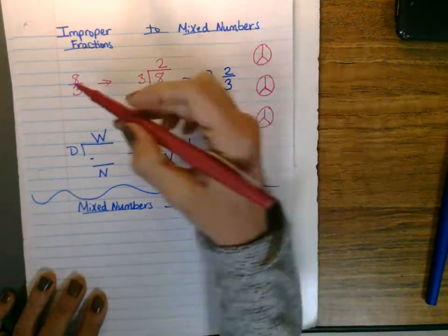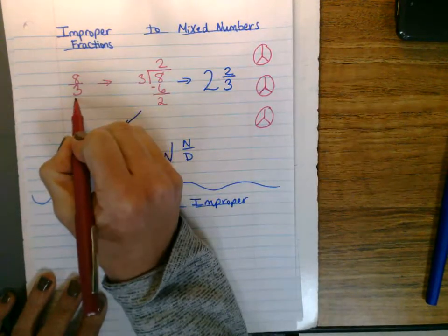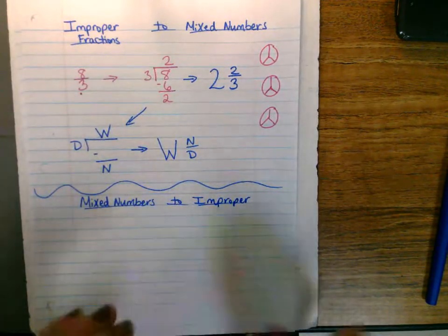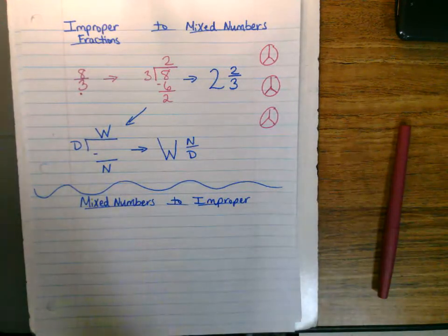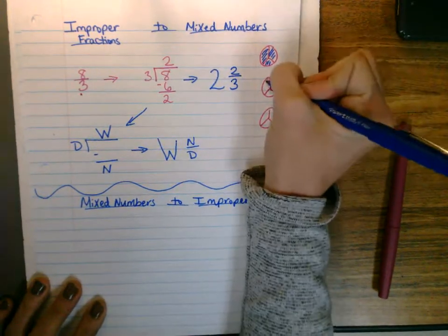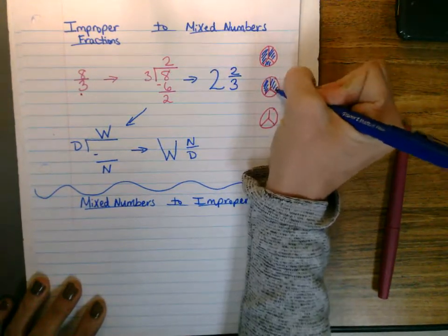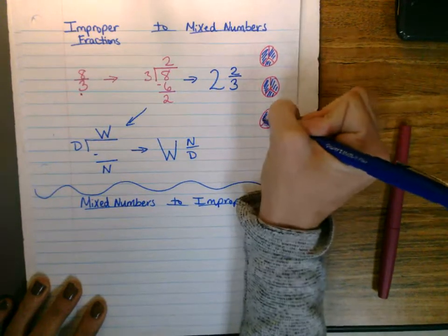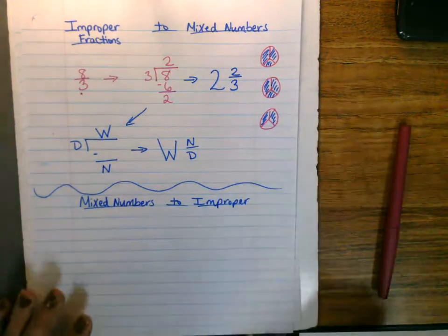So I have my holes cut into thirds, and I need to shade in eight of my thirds, so one, two, three, four, five, six, seven, eight.